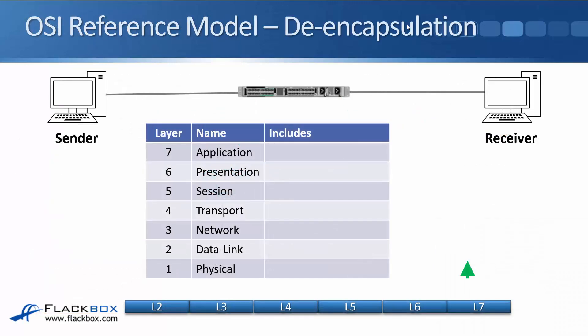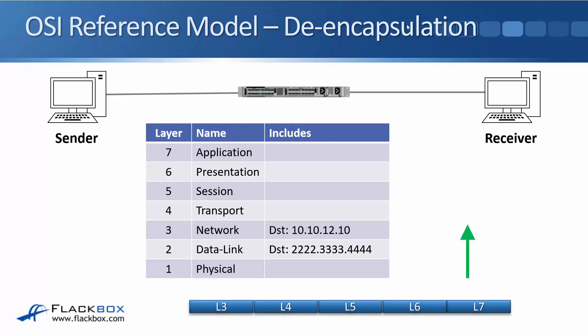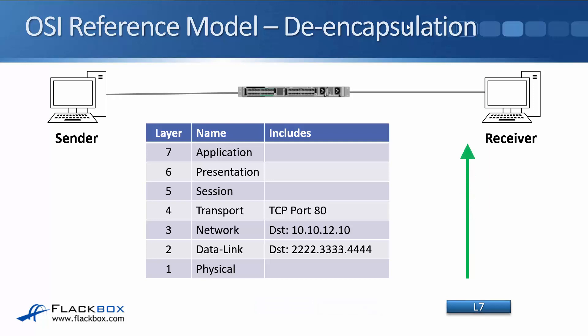The HTTP GET request comes in on the physical wire. The web server looks at the layer 2 header and sees that the destination MAC address is 2.3.4, which is itself, so it carries on processing. It looks at the layer 3 IP header and sees the destination IP is 10.10.12.10 — also itself. It then looks at the layer 4 transport header, sees it is TCP port 80, so it knows it's web traffic, and carries on up through the session, presentation, and application layers.